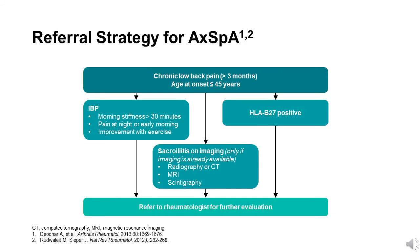Screening and referral strategies have been developed to help primary care physicians determine whether axial spondyloarthritis should be considered and to guide the initial evaluation for suspected axial SpA, including support in making the decision whether to refer patients to a rheumatologist. For example, according to a strategy proposed by ASAS, patients with chronic back pain for at least three months with an onset at age 45 years or before should be referred to a rheumatologist for further evaluation if they have any one of the following parameters.